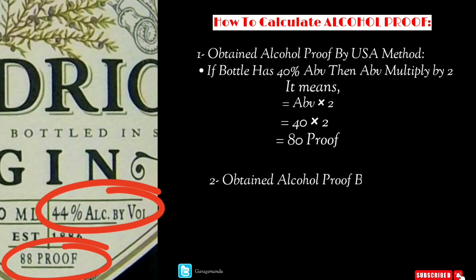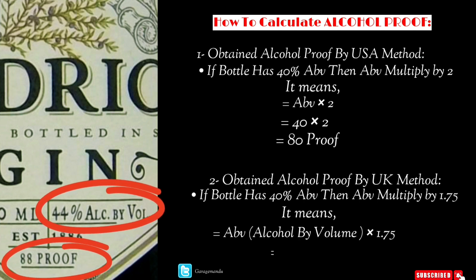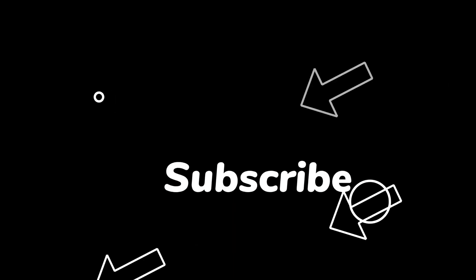In the UK method, alcohol by volume is multiplied by 1.75. This means if a bottle has 40 percent alcohol by volume, then it has 70 proof.